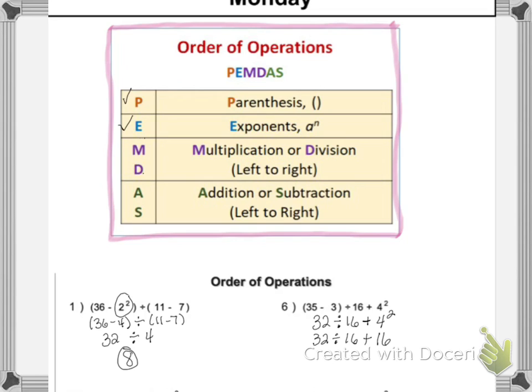Okay, so now I'm looking for multiplication or division, moving from left to right. I do see division. 32 divided by 16 is 2, plus 16. And then addition or subtraction, moving from left to right, 2 plus 16 is 18.